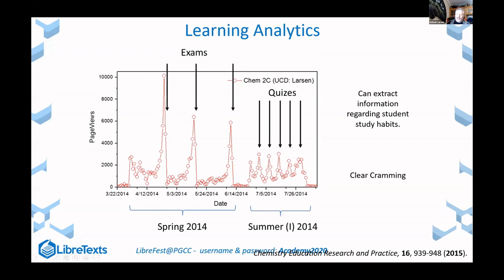In the subsequent quarter in the summer, I taught with weekly quizzes instead of three-week exams to try to get a baseline. You can find this in the Chemistry Education Research and Practice study. The crammers performed about 10% poorer than the non-crammers.